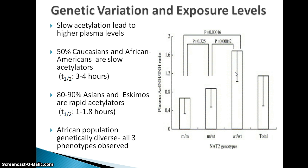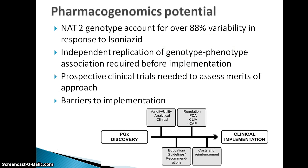African populations have been found to be genetically diverse, with all three phenotypes observed in populations studied so far. NAT2 genotype accounts for over 88% of variability in response to isoniazid, making it a good genetic factor to incorporate in a dosing algorithm for isoniazid. However, independent replication of genotype-phenotype associations is required before implementation, and prospective clinical trials are needed to assess the merits of the pharmacogenetics approach.